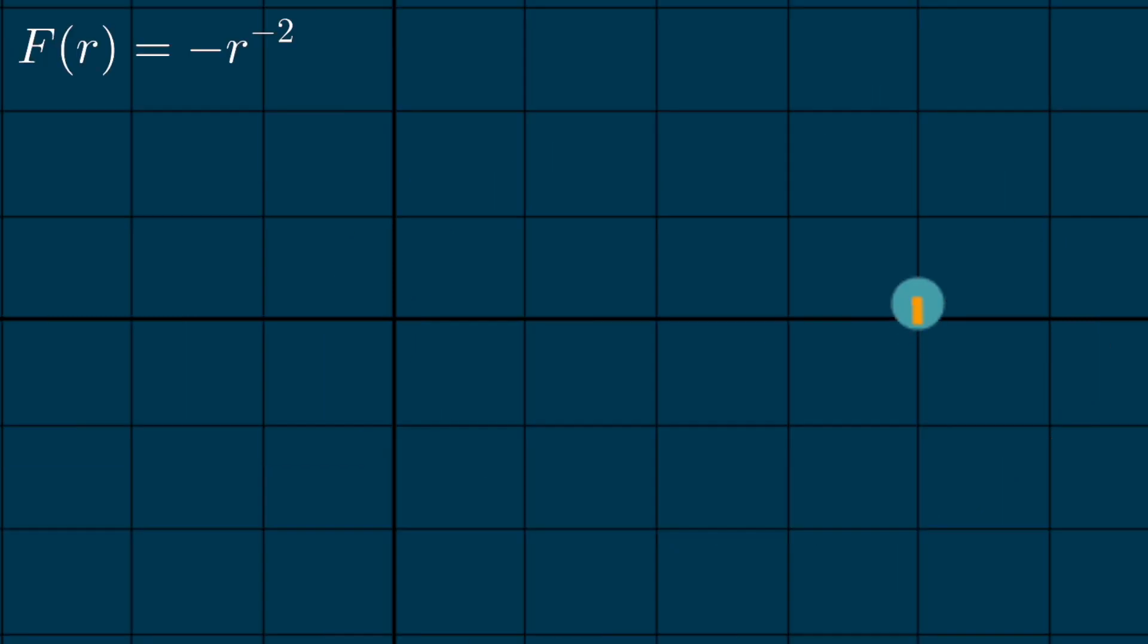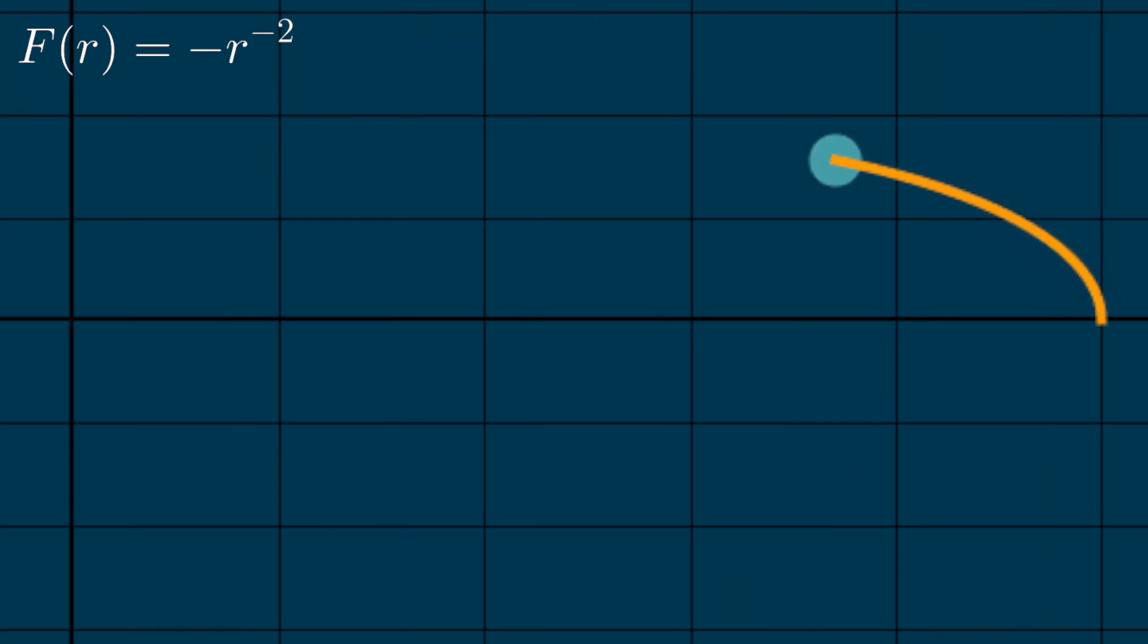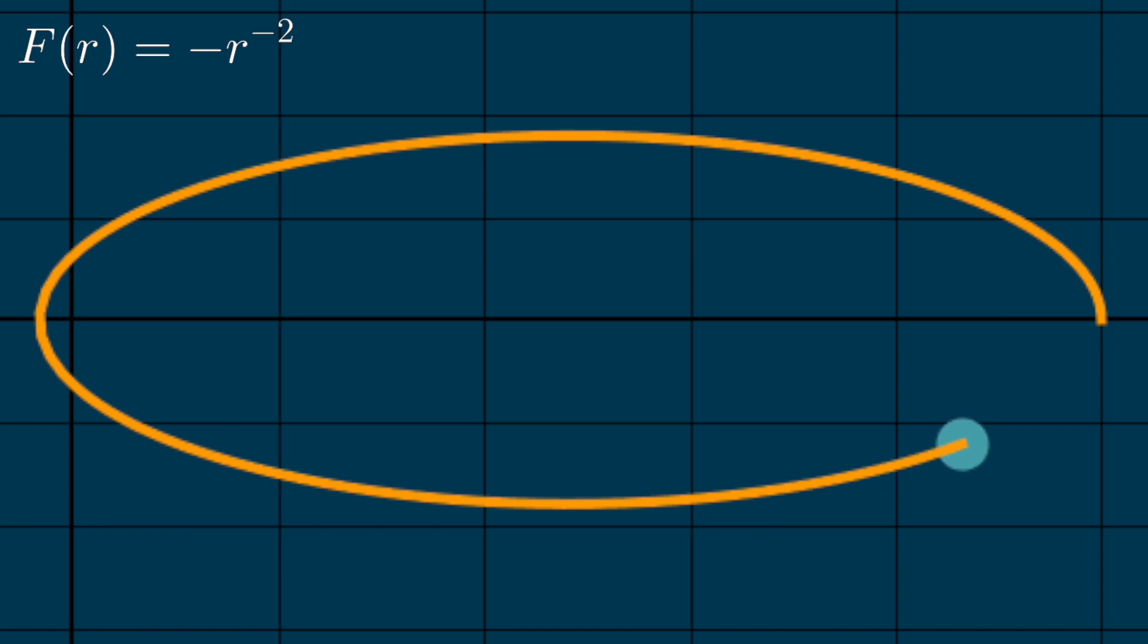The ellipse with a focus at the origin reminds us of the shape of an orbit of an object in a gravitational field, like the Earth orbiting the Sun. Although the orbit of the Earth around the Sun is almost a circle, there are some very eccentric orbits like those of comets, and it turns out we can get any elliptical orbit.